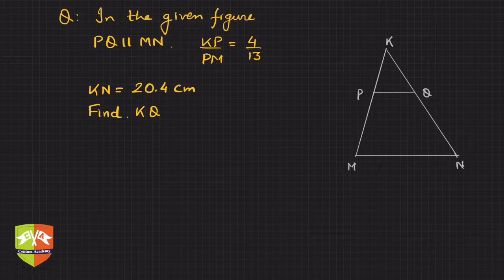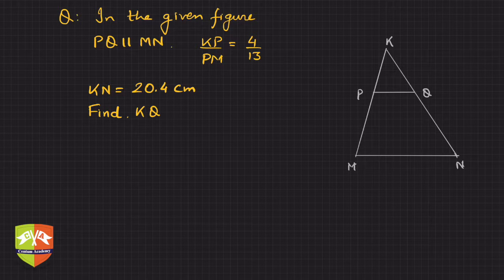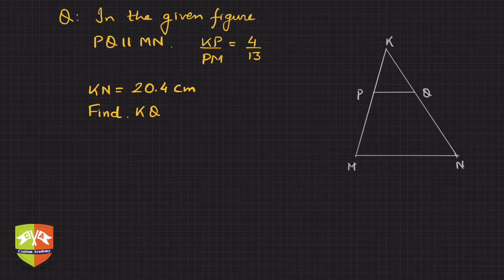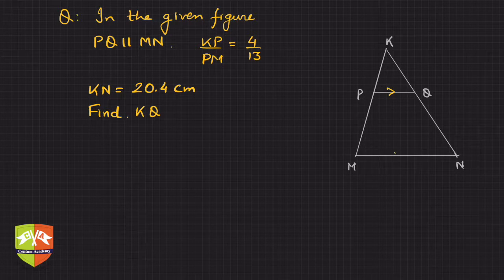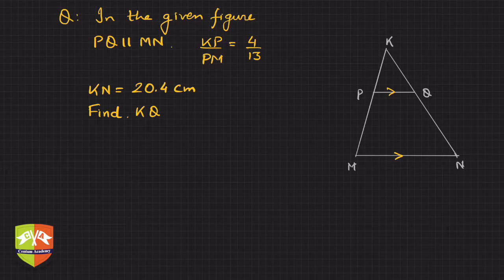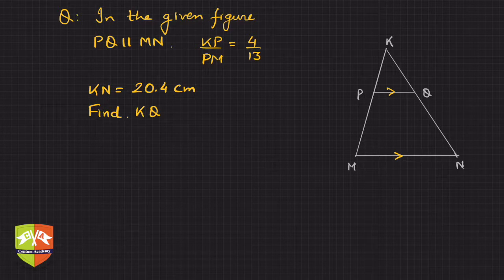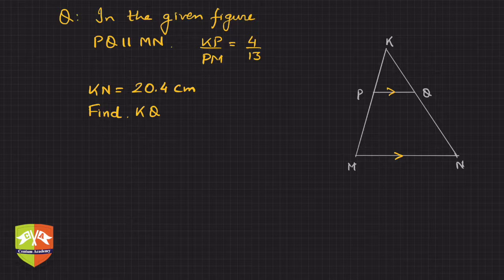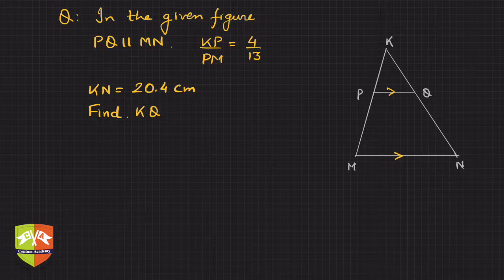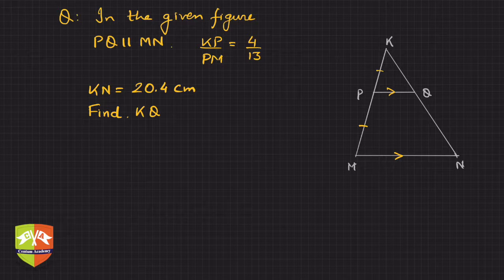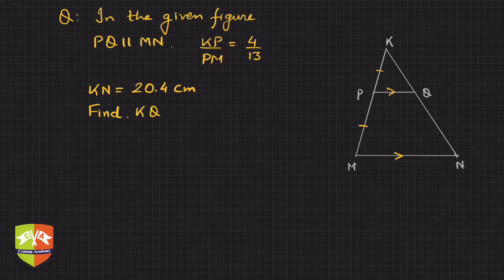In this question, it's been given that in the given figure PQ is parallel to MN. These two lines are parallel, and KP upon PM is given as 4 upon 13. So hence, KP upon PM—this is KP—is given as 4 upon 13.